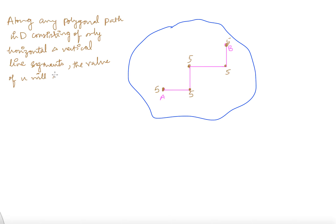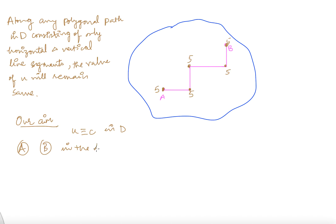Now, till now we used nothing about the domain — we did not use the property of openness or connectedness of the domain. Now what is our aim? Our aim is to prove that u equals constant in D. So it means I want to prove that if I take any two points A and B in the domain, then u at A should be the same as u at B. We have this result: along any polygonal path in D consisting only of horizontal and vertical line segments, the value of u will not change. But my aim is to show this for any two arbitrary points inside my domain.